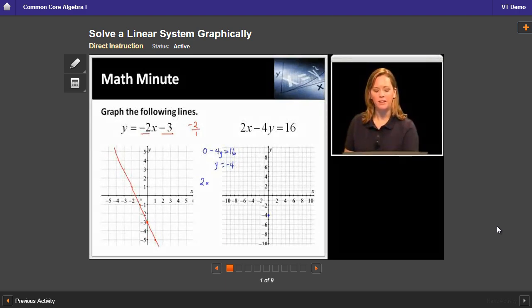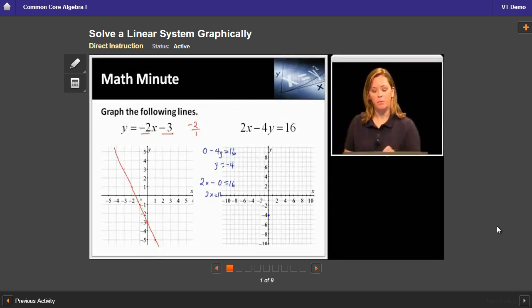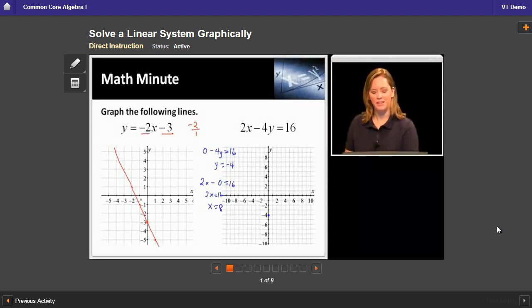So now we have 2x minus 0 equals 16, and so 2x equals 16. If I want to solve for x, divide both sides by 2, and I get x equals 8.